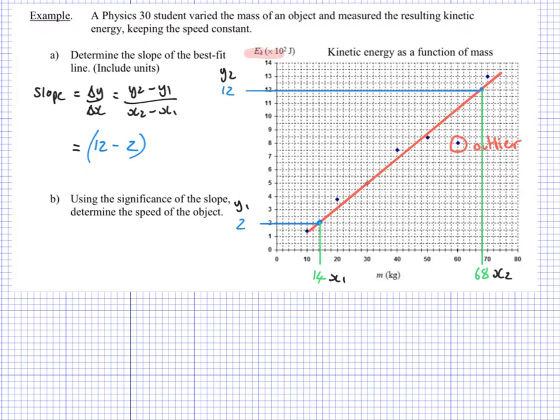Well, it's going to give me 12 minus 2. Now, I've got to be careful. Please don't forget this. Another common mistake. Don't forget the exponent on this one. So this is going to be times 10 to the 2, and I'm going to keep my units in here. Joules over 68 minus 14, and there's no exponents on this one. Just kilograms. So I'm getting a value there, if I put that into my calculator, of 18.58, lots of decimal places. And this is in joules per kilogram.